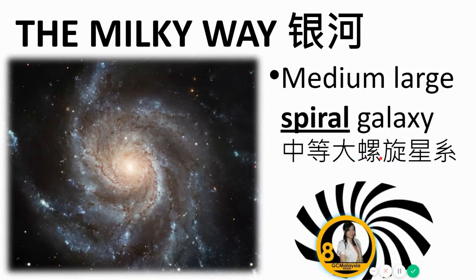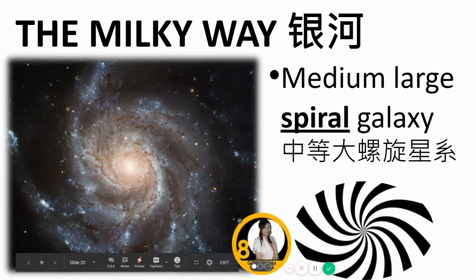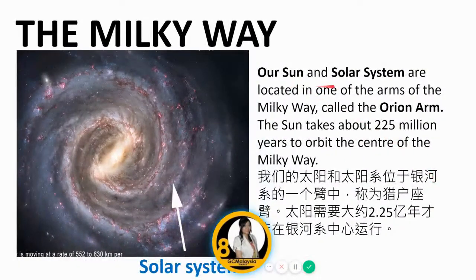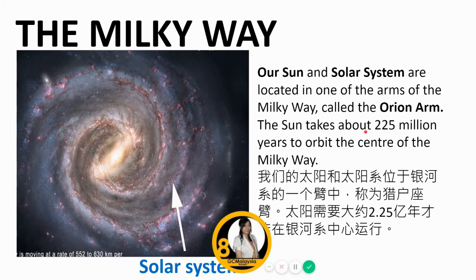The Milky Way is a medium-large spiral galaxy. Our sun and solar system are located in one of the arms of the Milky Way. The sun takes about 225 million years to orbit the centre of the Milky Way.